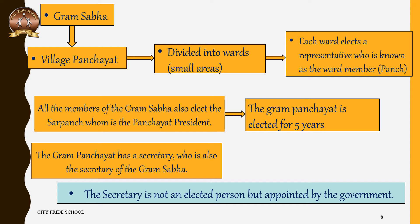Every village Panchayat is divided into wards, which are smaller areas, and each ward elects a representative known as a ward member. All the members of the Gram Sabha also elect the Sarpanch, who is the Panchayat president. The ward members and the Sarpanch form the Gram Panchayat, and the Gram Panchayat is elected for five years. The Gram Panchayat also has a secretary who is also the secretary of Gram Sabha.